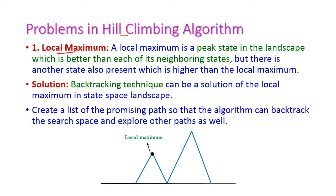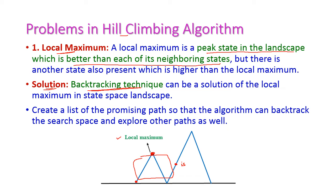Now let us see some of the problems in this hill climbing algorithm. The first problem is local maximum — a peak state in the landscape which is better than each of its neighboring states. All its neighboring values are smaller than this current node, hence this is called local maximum. To overcome this problem, we use a backtracking technique: if we reach the local maximum, we select some other point as the initial state and restart the program. This way, the local maximum problem is overcome and we can reach the global maximum.